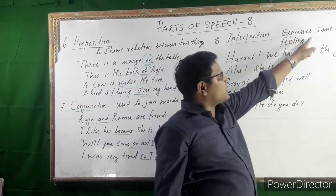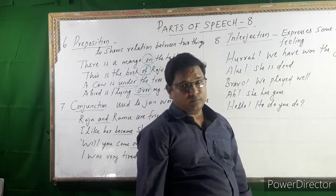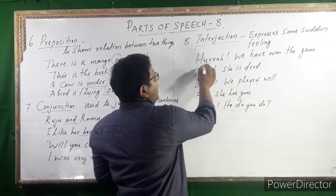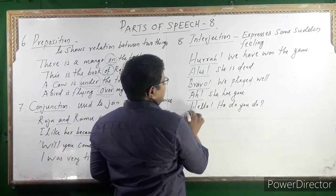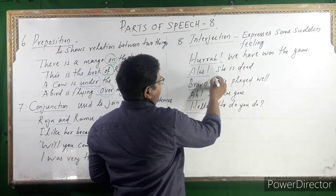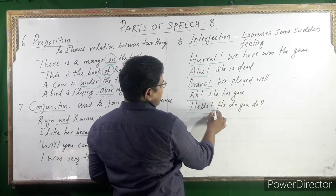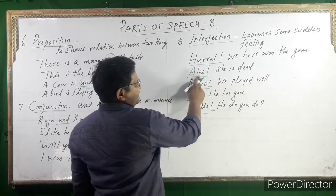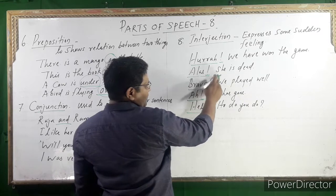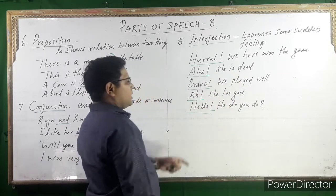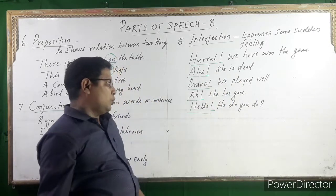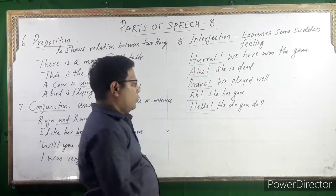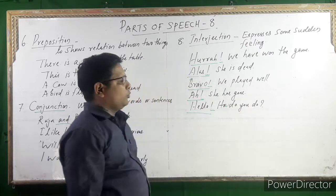Interjection expresses a sudden feeling. After the expression, we put an exclamation mark. For example: 'Hurray! We have won.' 'Alas! She is dead.' 'Bravo! We played well.' 'Ah, she has gone.' 'Hello, how are you?' 'Hello, how do you do?'